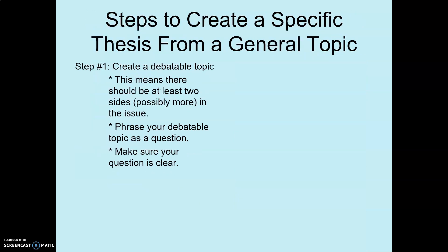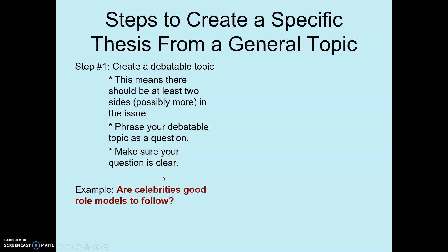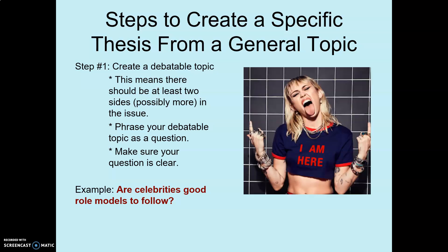What I would like to do is go from general to specific. Step one is to create a debatable topic — it should have at least two sides, maybe more. Maybe phrase your debatable topic as a question and make sure your question is clear. For example: are celebrities good role models to follow? Phrasing it as a question makes it a lot easier to possibly answer.